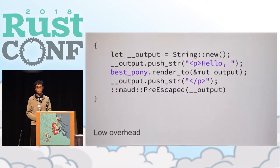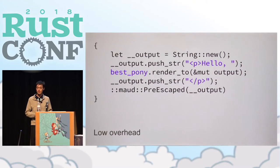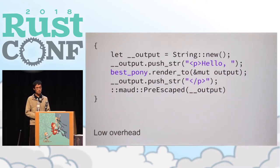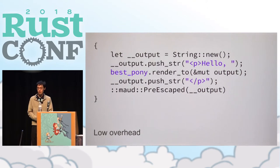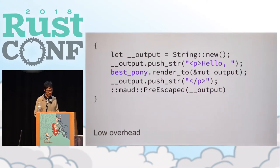If you were to try to write an HTML template by hand, you'd be hard-pressed to write something simpler or more efficient than that. And that's one of the biggest advantages of using Maud or any other procedural macro solution: really low runtime overhead.